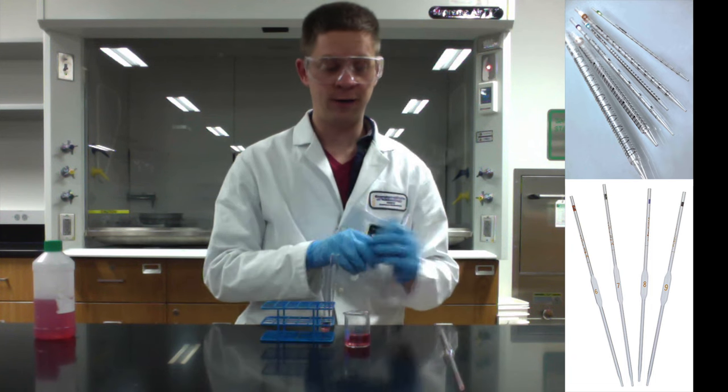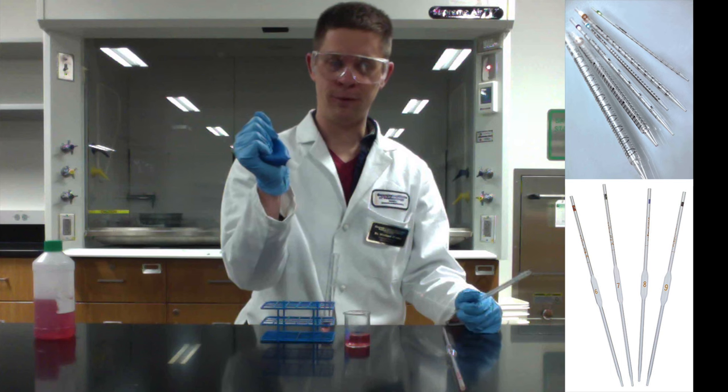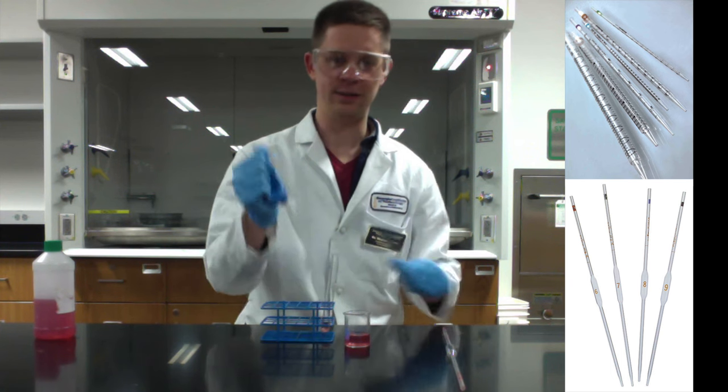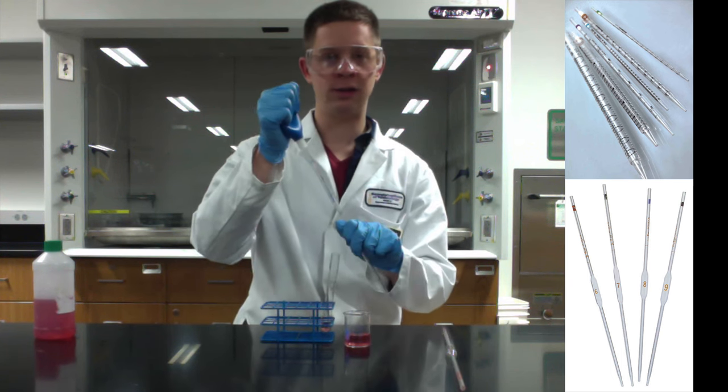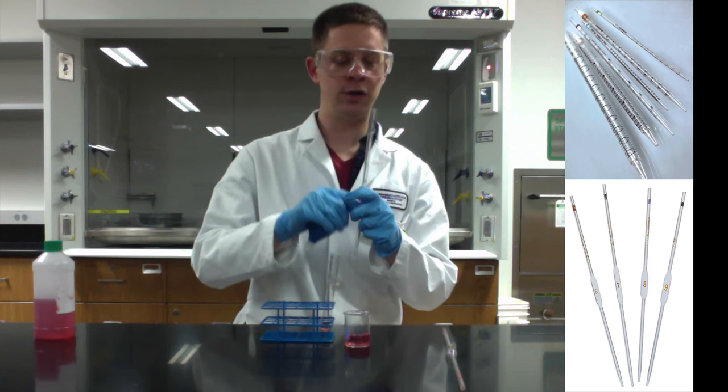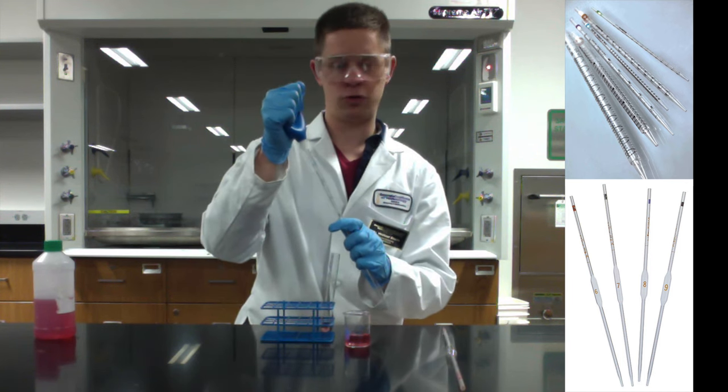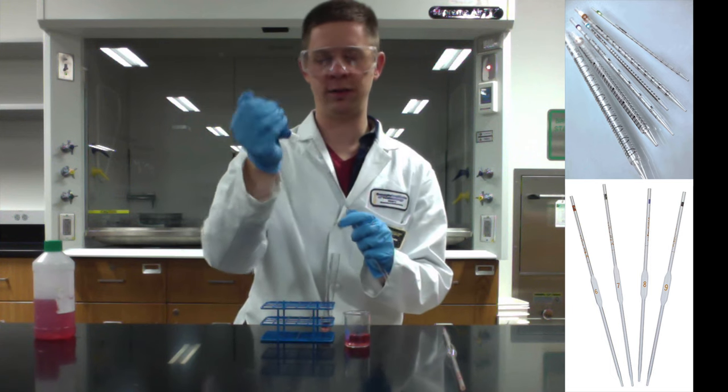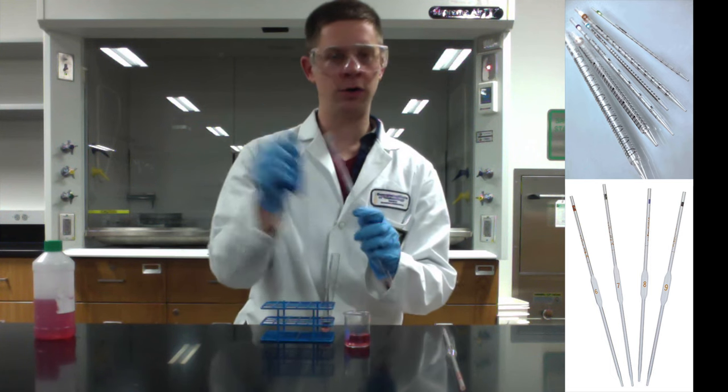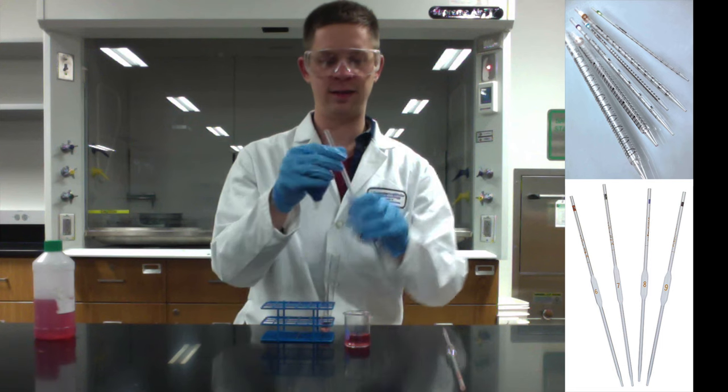When transferring, squeeze the pipette bulb first, place the plastic part onto the end of the pipette. Gently let up, and do not be afraid to go above the liquid level. Be gentle with the pipette bulb. Don't just kind of let it all come up at once, because then you'll pull liquid into the pipette bulb. But you're welcome to go above the line, and that's the easiest thing to do.